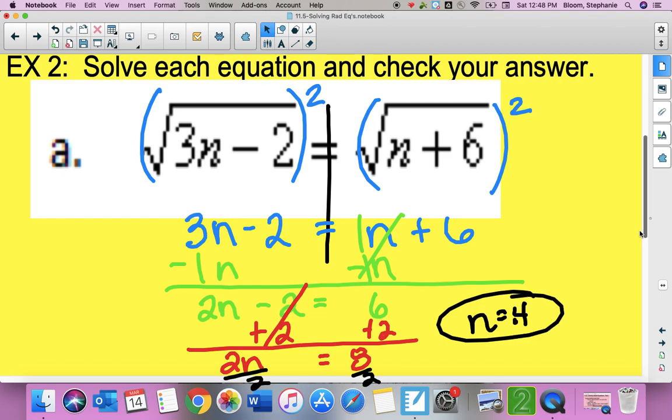And we're just going to check and make sure that this works. Make sure it's not a negative under there. So if I put 4 right there, 3 times 4 is 12 minus 2 is 10. If I put a 4 here, 4 plus 6 is also 10. So it does in fact work. Rad 10 equals rad 10. And so there is our answer.